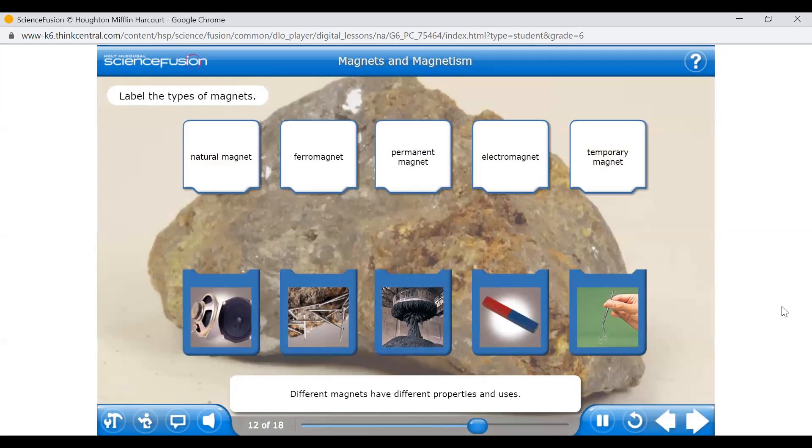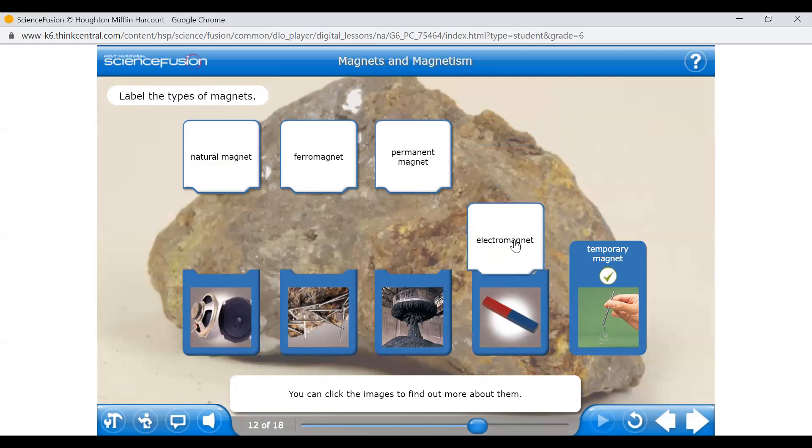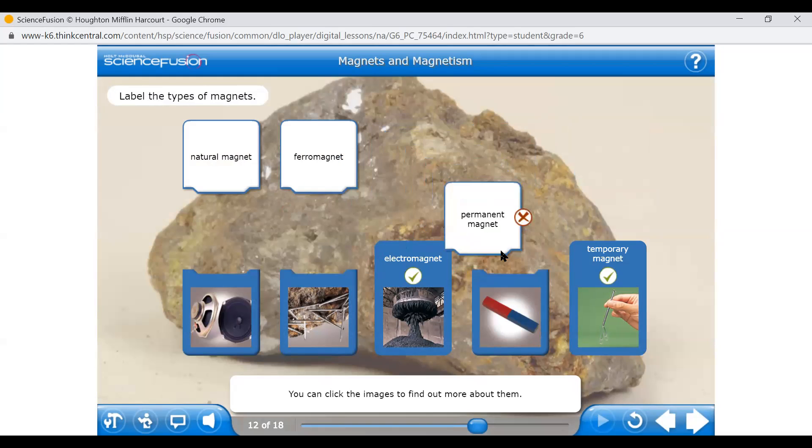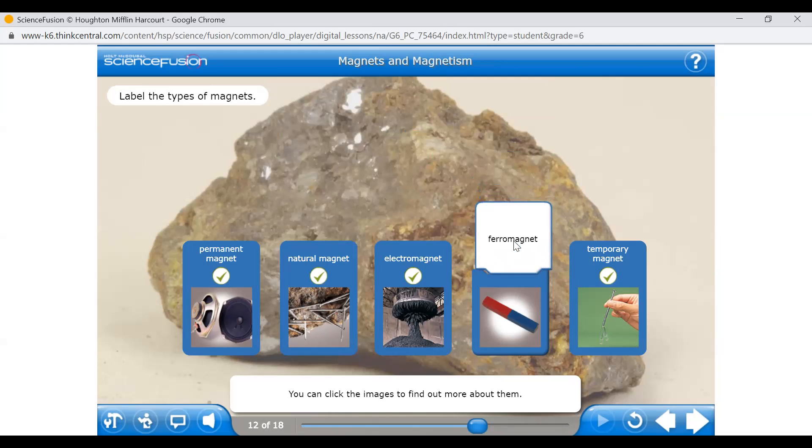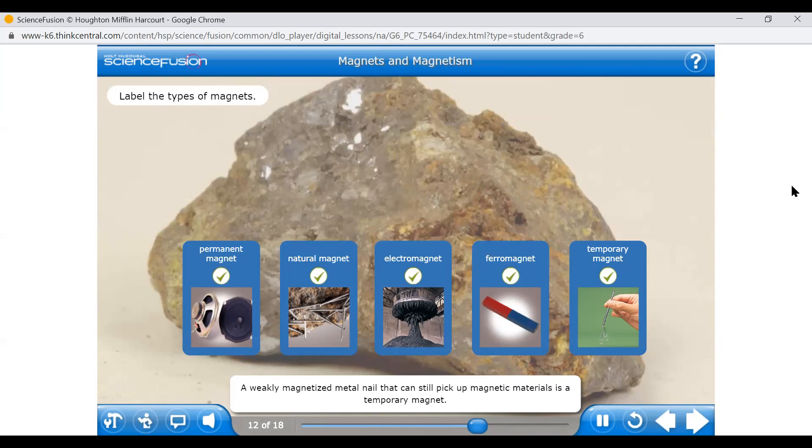Different magnets have different properties and uses. Drag each label to the image of a magnet that it best describes. You can click the images to find out more about them. I'll try my best on this. Again, if we were in class, you'd be able to go to the board and drag this. So doing it on the computer is making it a little challenging. But I think we might get it. All right, there we go. Well done. You've matched them all. A bar magnet is an example of a ferromagnet. Loudspeakers use permanent magnets to convert electrical signals to sound. A weakly magnetized metal nail that can still pick up magnetic materials is a temporary magnet. Magnetite is a naturally occurring magnetic mineral. Electromagnets are used in junkyards to lift heavy metal objects.